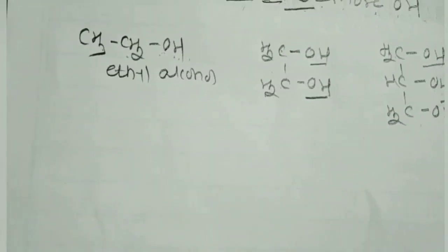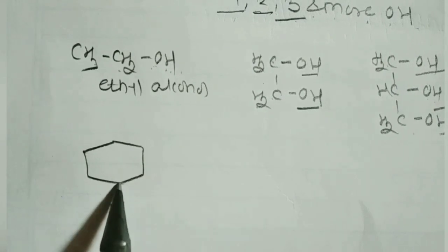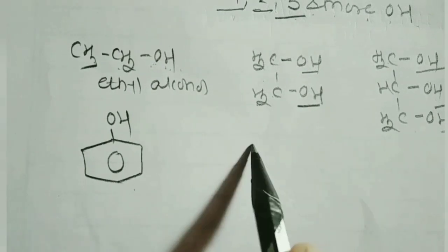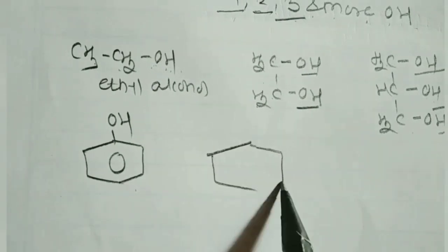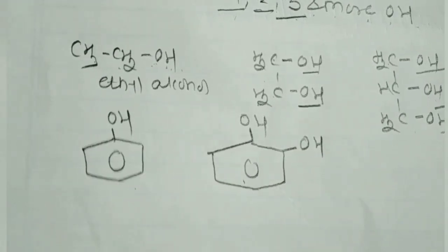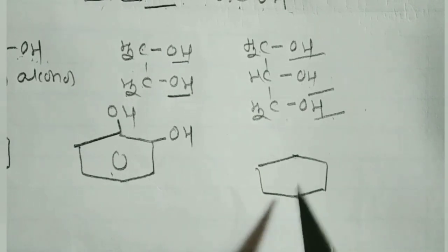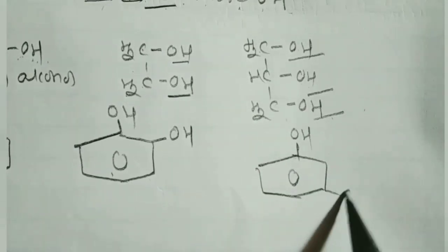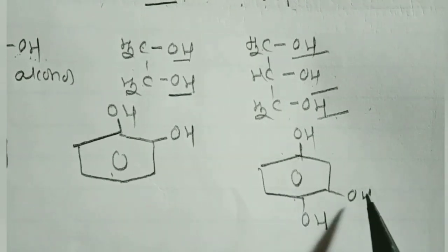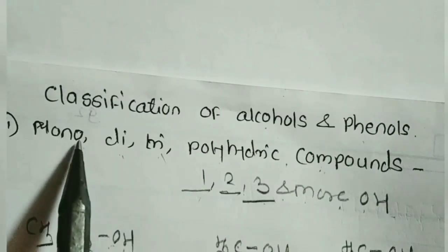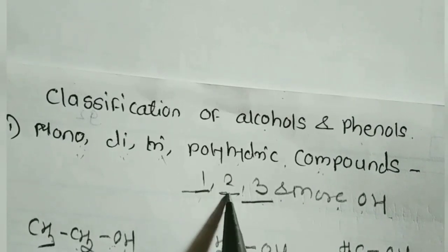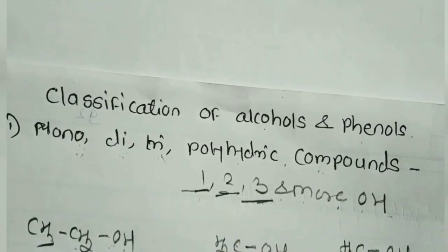For phenols: a benzene ring attached to 1 OH group is a monohydric phenol. A benzene ring attached to 2 OH groups is a dihydric phenol. And a benzene ring attached to 3 OH groups is called a trihydric phenol. This completes the first classification — monohydric, dihydric, and polyhydric compounds — on the basis of the presence of 1, 2, 3, or more hydroxy groups.